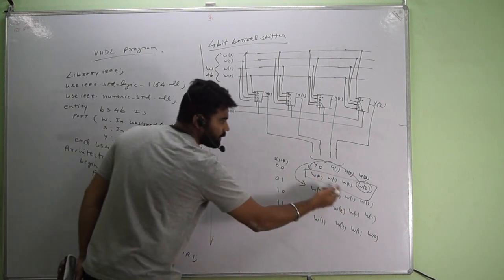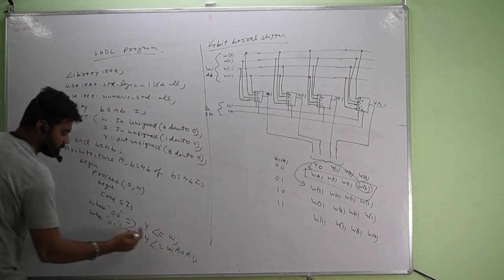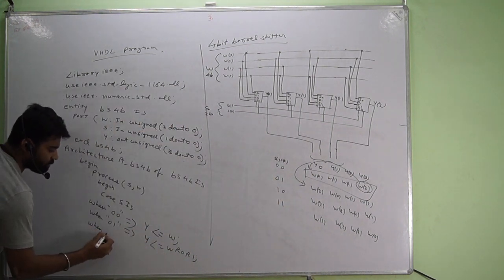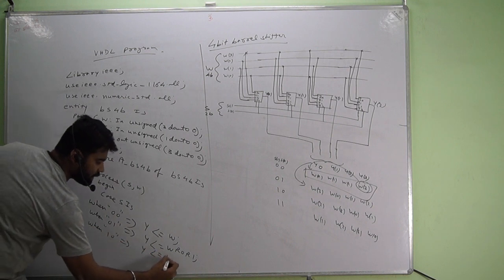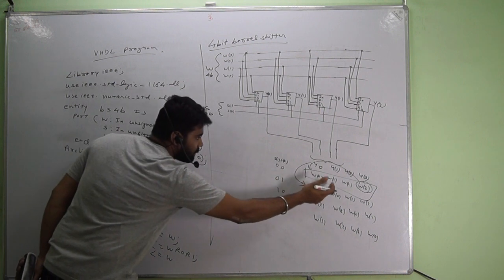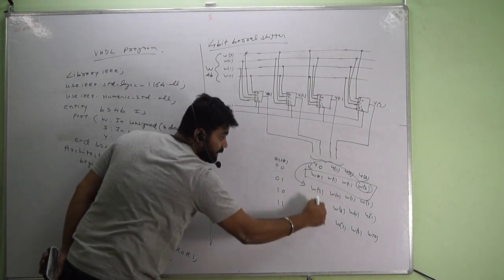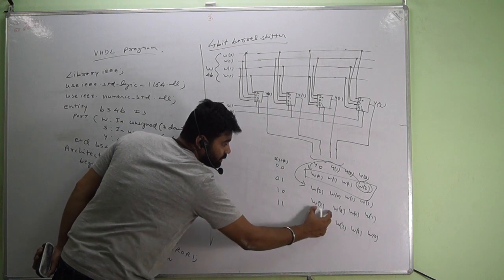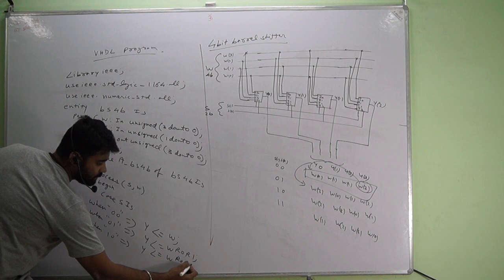When 1 0, y again w. W is again the reference, but now we have to rotate it twice, for one for this, again for this. That is r o r two times.